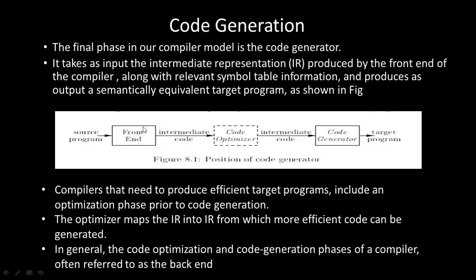The front end produces intermediate code, which passes to the code optimizer phase. The code optimizer optimizes the intermediate code and converts it into optimized intermediate code, which then passes to the code generator phase, giving us the target program as machine code. Compilers that need to produce efficient target programs include an optimization phase prior to code generation. The code optimizer maps intermediate representation into a more efficient intermediate representation.